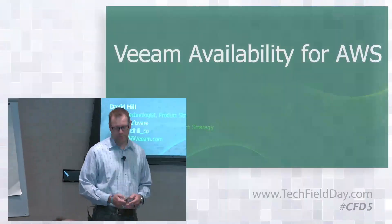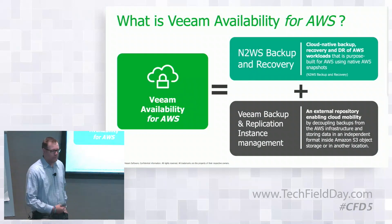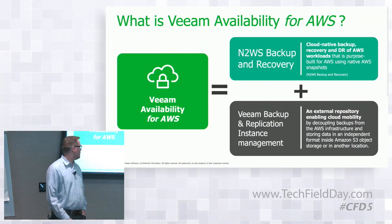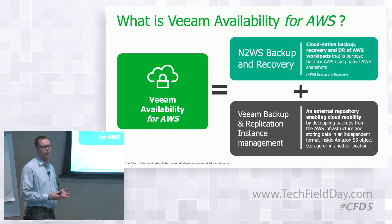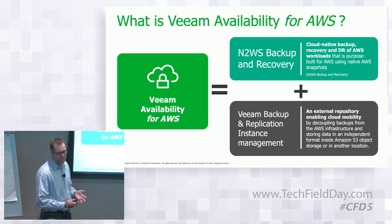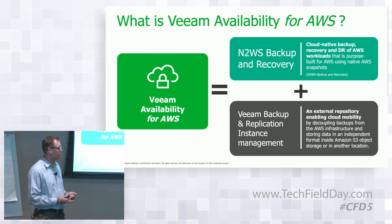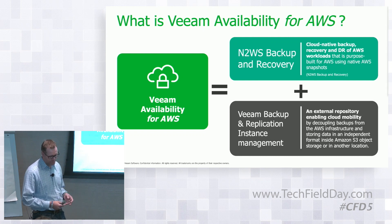We're going to talk about Veeam Availability for AWS and what we can do around protecting the actual instances and services being consumed within the AWS cloud platform. Veeam Availability for AWS is essentially a solution that combines two products in Veeam's portfolio: N2WS Backup and Recovery, and Veeam Backup and Replication's instant management.